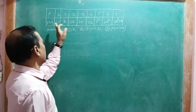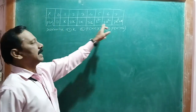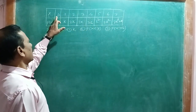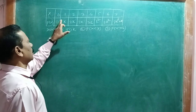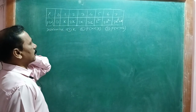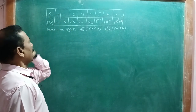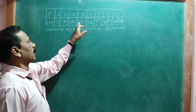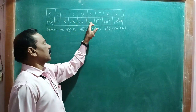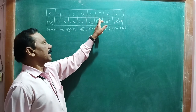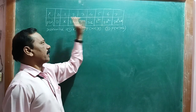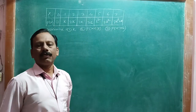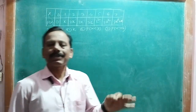The probability values are given as: P(x=0) = 0, P(x=1) = k, P(x=2) = 2k, P(x=3) = 2k, P(x=4) = 3k, P(x=5) = k², P(x=6) = 2k², and P(x=7) = 7k² + k.